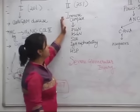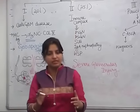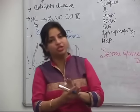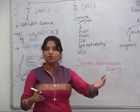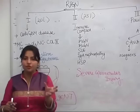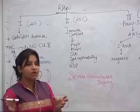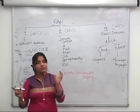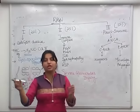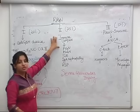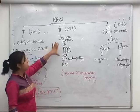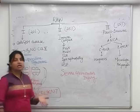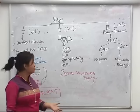Type 2 RPGN is caused by immune complex mediated disease. Any immune complex mediated disease can progress into RPGN Type 2 — for example, most PSGN patients recover, but a few progress to RPGN Type 2. MCQ point: PSGN patients who progress to RPGN go into Type 2. Other diseases like SLE, IgA nephropathy, and HSP can also lead to RPGN Type 2.